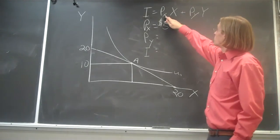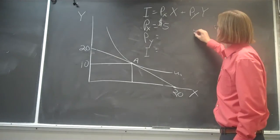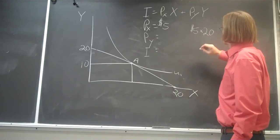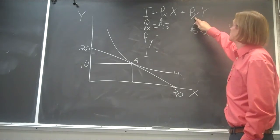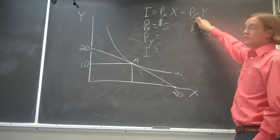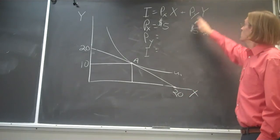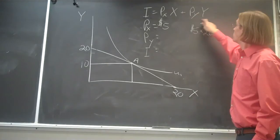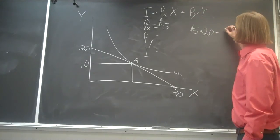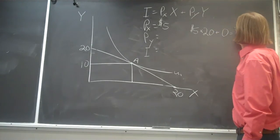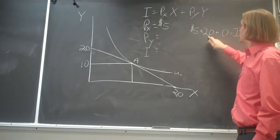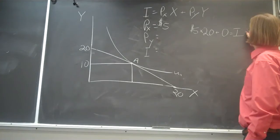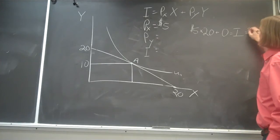the price of X is going to be 5 times the 20 units that we're purchasing plus the price of good Y, which we don't know. But we do know that at this point we're buying no Y, and so we know that this part of the budget constraint is going to be zero. So 5 bucks times the 20 units is going to be equal to our income, which is equal to 100 bucks.